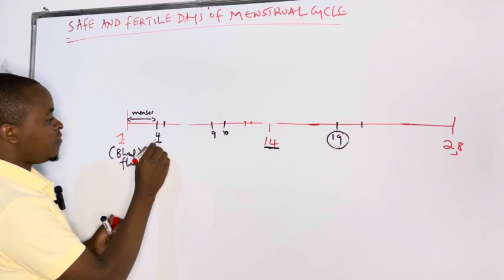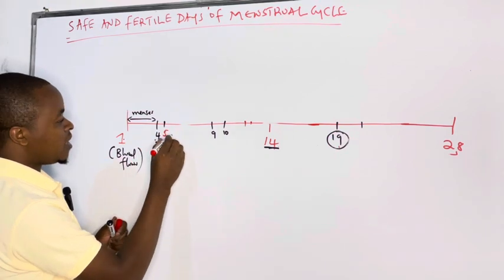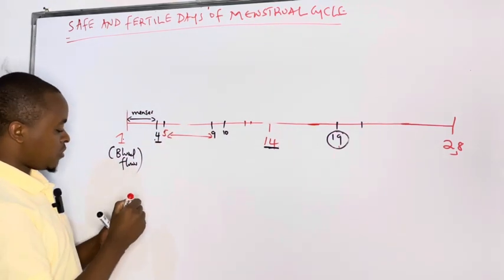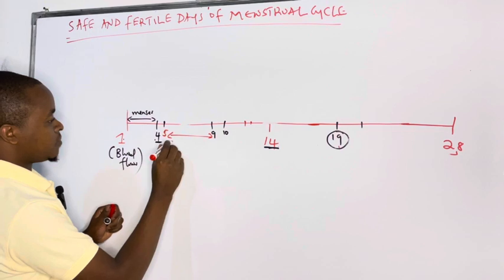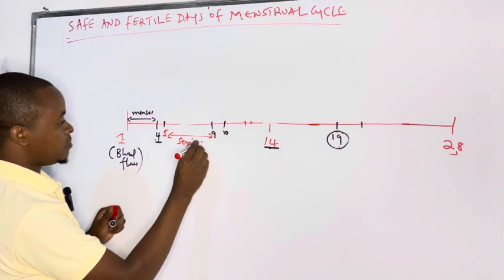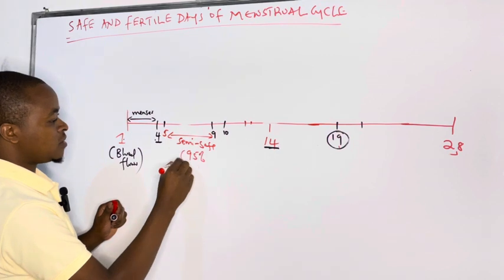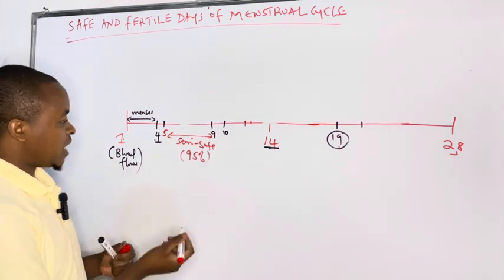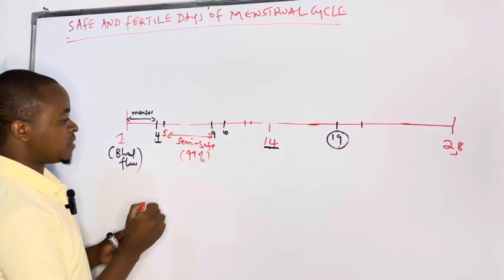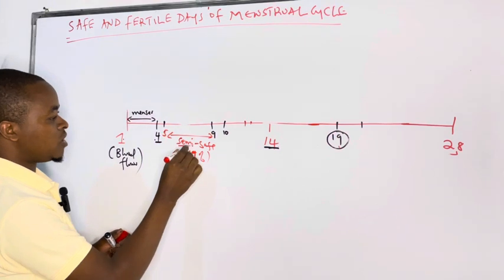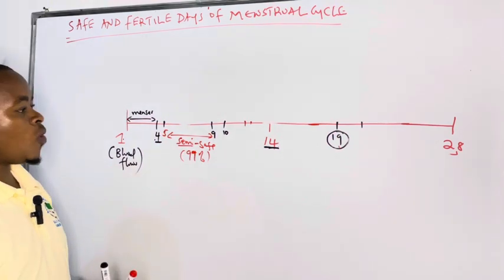Then from day 5 to day 9, these ones we call semi-safe days. They are safe but not so safe. They are 95%, they are not 100, or we can say even 99% but not 100. That's why we are calling them semi-safe. Why?